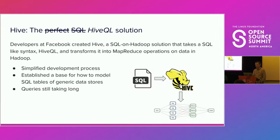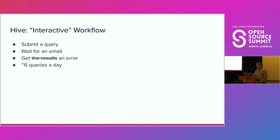However, Hive on its own was still running on the MapReduce platform. It was mainly designed for long-running batch processing, so it was fairly slow for interactive workloads — the actual experience was nowhere near interactive. Querying in Hive was a very tedious and time-consuming process: you'd submit a query and then wait for a notification by email telling you that processing is done, and in case of any error, you had to start the process over again.